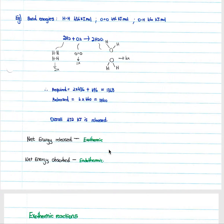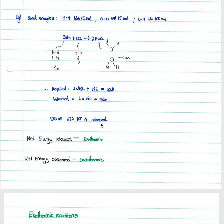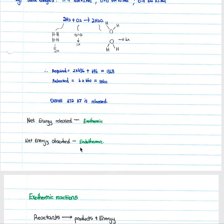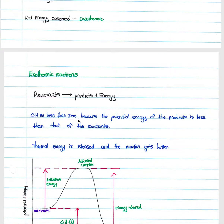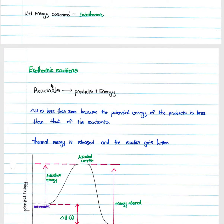When we have a net energy released — as in this example with 472 kJ/mol released — we call the reaction exothermic. Where the energy released in bond formation is smaller than the energy absorbed, we refer to that as endothermic. A reaction in which net energy is released is called exothermic.